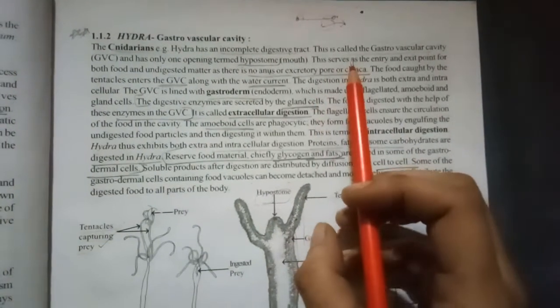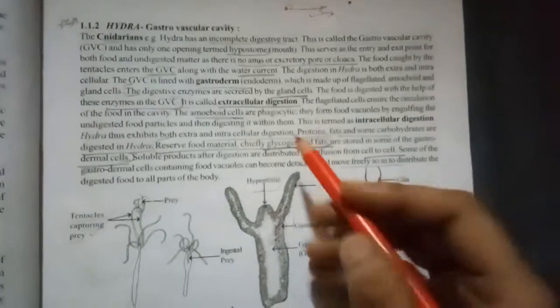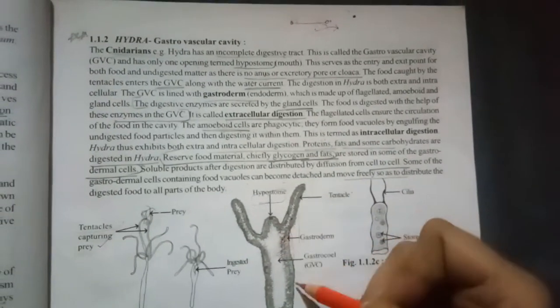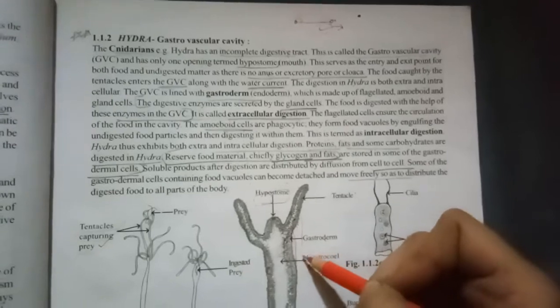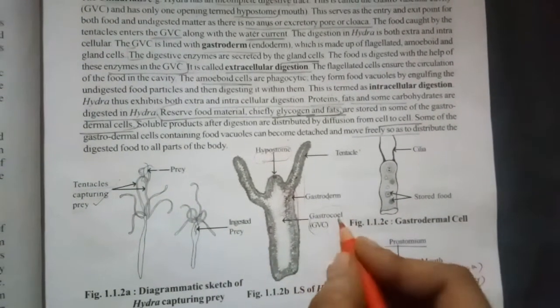Hypostome is the only opening, so they don't have any anus or excretory pore. Now this GVC consists of - this gastroderm or gastro vascular cavity, this cavity is called as gastro seal and the layer is called as gastroderm.